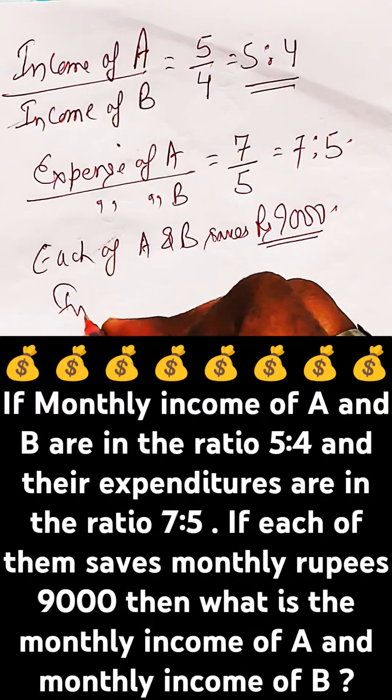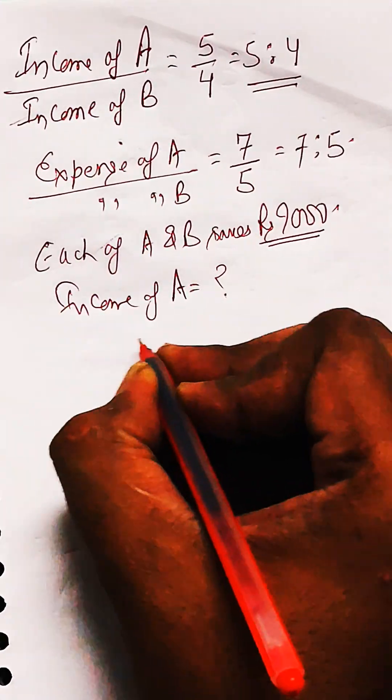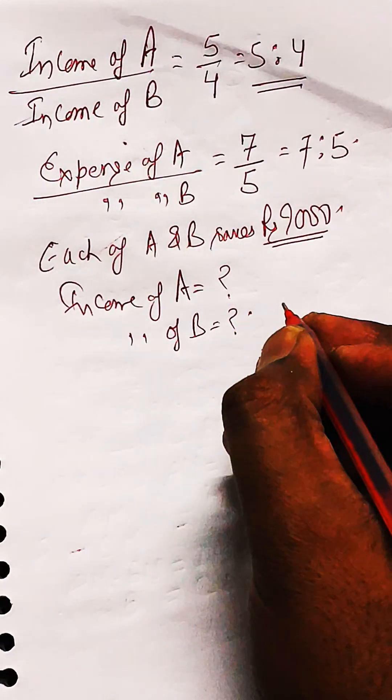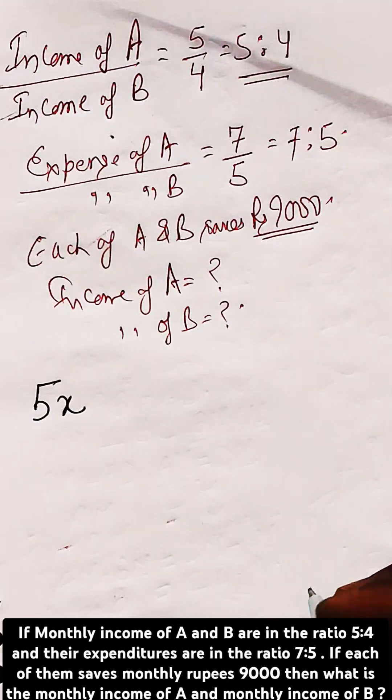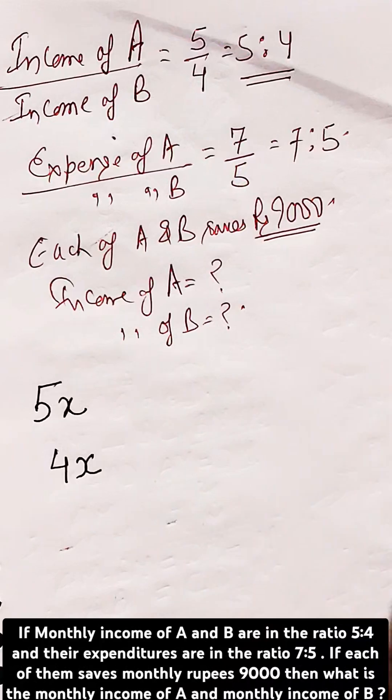We need to find income of A and income of B. Let's say income of A is 5x, then income of B will be 4x.